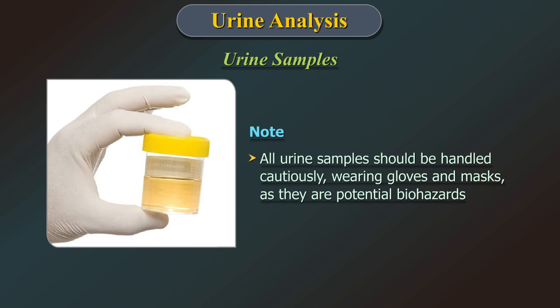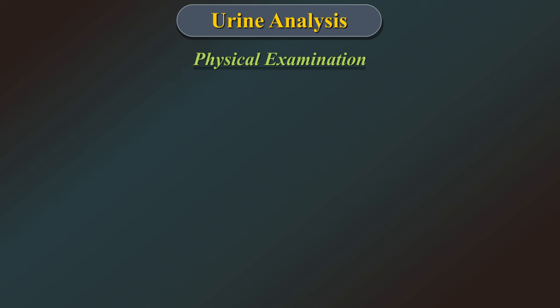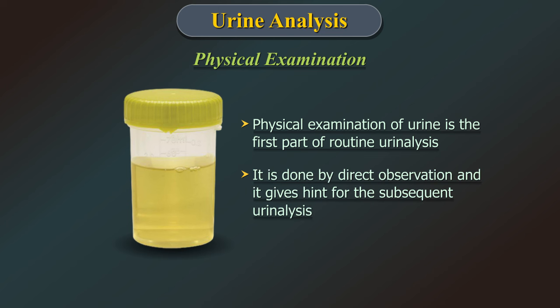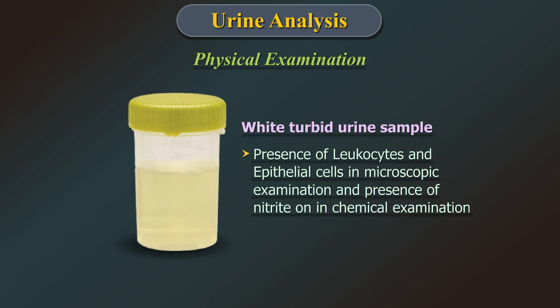Please note, all urine samples should be handled cautiously, wearing gloves and masks as they are potential biohazards. Physical examination of urine is the first part of urine analysis. It is done by direct observation and gives a hint for subsequent analysis. For example, white turbid urine may suggest the presence of leukocytes, that is pus cells and/or epithelial cells in microscopic examination, and presence of nitrite on chemical examination.